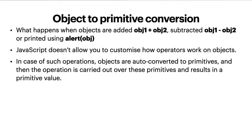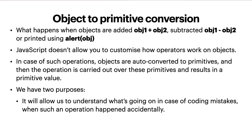The result of operations like object one plus object two cannot be another object. For example, we cannot make objects representing vectors, matrices, or achievements, add them and expect a summed object as a result. Such architectural features are automatically off the board. There is no maths with objects in real projects — when it happens, with rare exceptions, it's usually because of a coding mistake. In this lecture we'll cover how an object converts to a primitive and how to customize it.